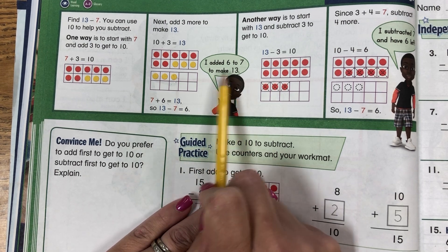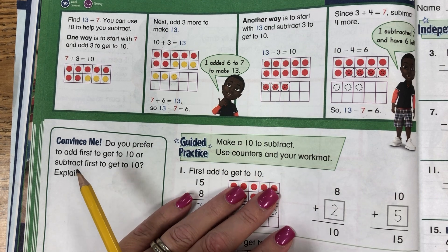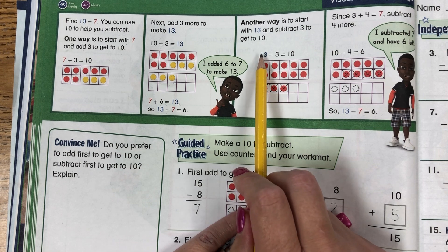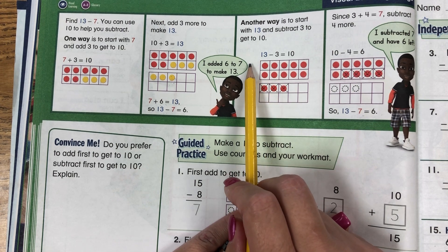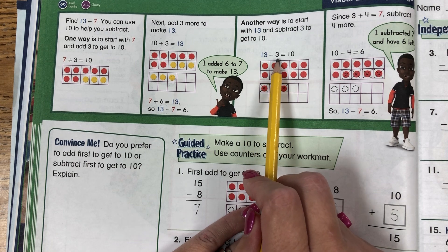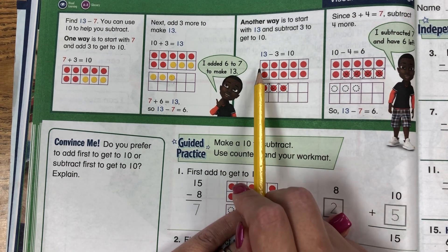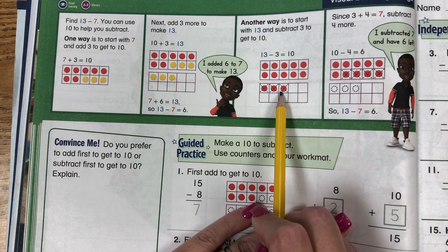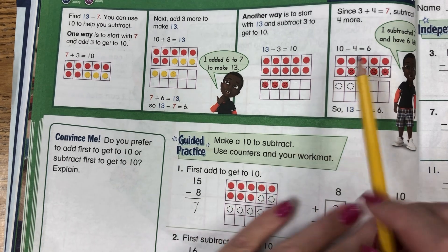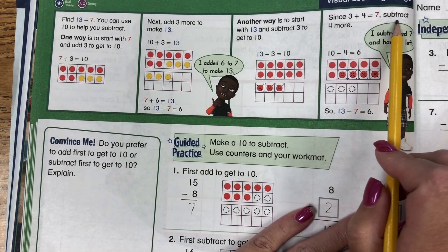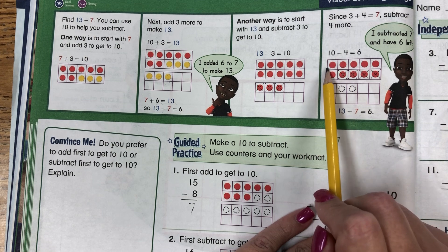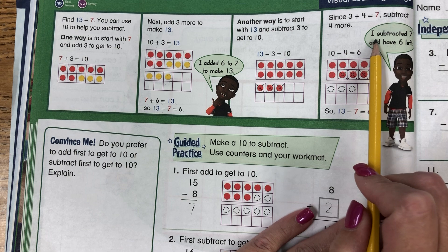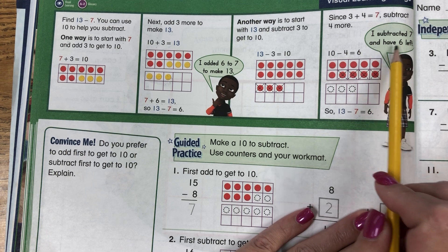7 plus 6 equals 13, so 13 minus 7 equals 6. I added 6 to 7 to make 13. Another way is to start with 13 and subtract 3 to get 10. 13 minus 3 equals 10. So they put 13 counters down and subtracted 3 to get back to 10. Since 3 plus 4 is 7, subtract 4 more. 10 minus 4 equals 6. He says: I've subtracted 7 and have 6 left.